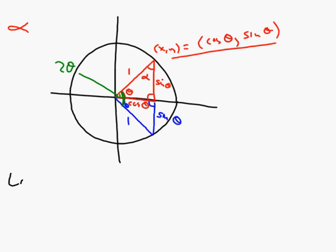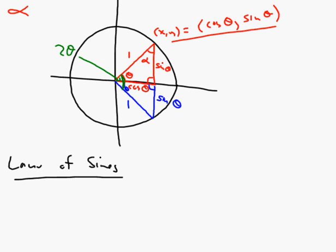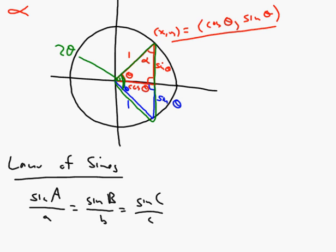It's helpful to remember an old law called the law of sines. The law of sines says that in any triangle, the sine of angle A over the opposite side a equals the sine of angle B over the opposite side b, equals the sine of angle C over the opposite side c. So the lowercase letters represent sides, and the uppercase letters represent angles. I'm going to use that relationship here on our big outer green triangle.